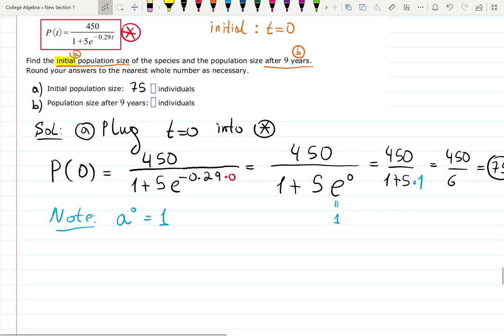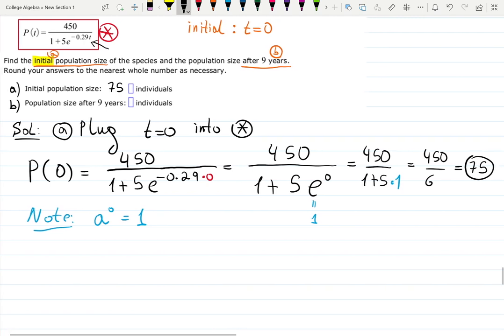75 individuals were at the beginning of the population. So when they discovered on the island some kind of species of animals they saw 75 of them. How do I know? Because when I plugged zero into t at time zero we had 75 species.